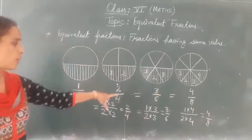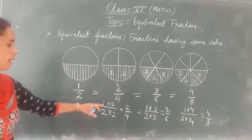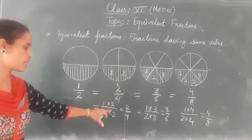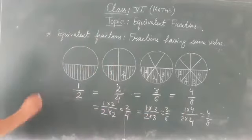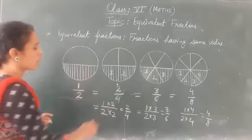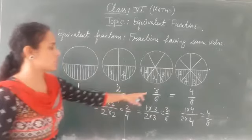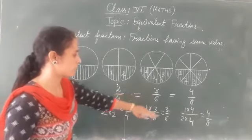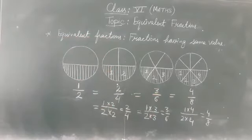So to get an equivalent fraction, we have to multiply the given fraction, its numerator and denominator by the same number. So all these are equivalent fractions because when you simplify it, it will give you 1 by 2. This is also 1 by 2, 4 by 8. So these are the equivalent fractions.